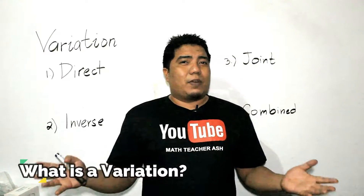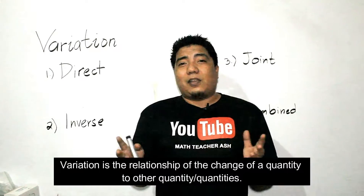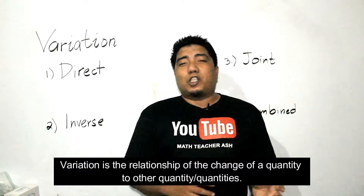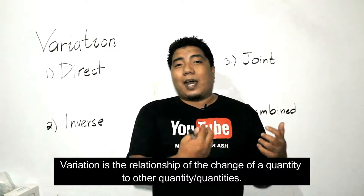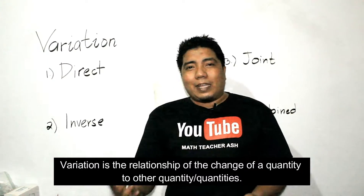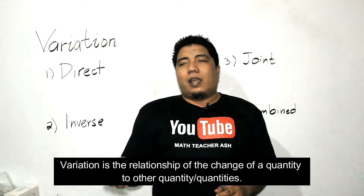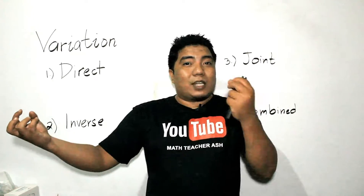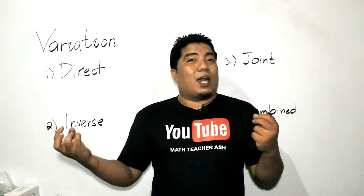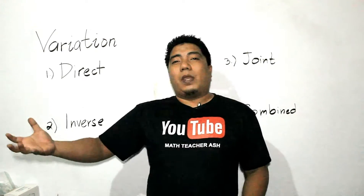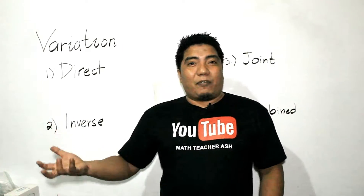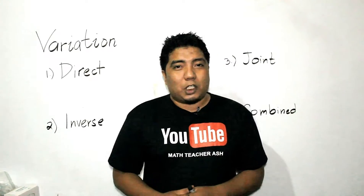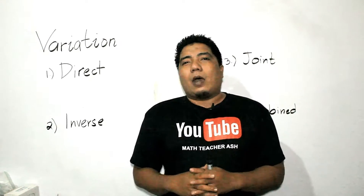The question is, what is a variation? Variation is defined as the relationship of the change of one quantity to the other quantity or quantities. It means that if there are two variables, when you change one variable, how does it affect the other variable? If there are many variables, how does it affect other variables? That is what variations is all about.